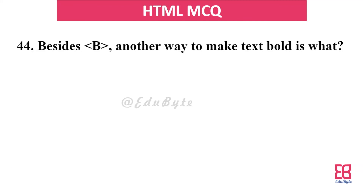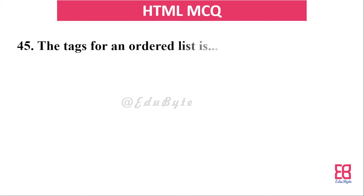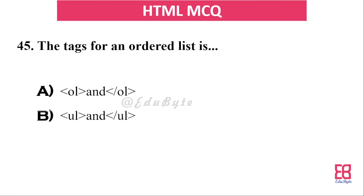Question forty: which tag makes text bolder than the `<b>` tag? The options include `<b>`, `<strong>`, and `<em>`. The correct answer is `<strong>` — the strong tag makes text bolder with semantic emphasis.